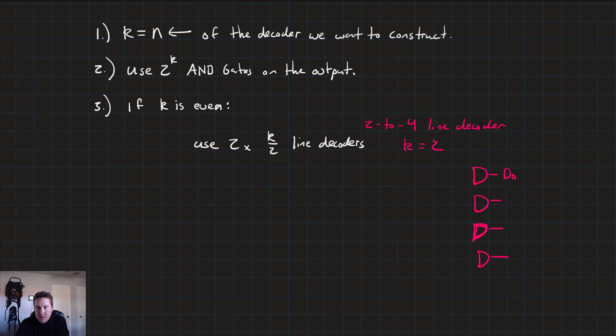That would be our D0, D1, D2, and D3 for outputs. And since k is even, we'll use k over 2 equals 2 over 2 equals 1, an input size one, two 1 to 2 line decoders. So we'll have a 1 to 2 and a 1 to 2. These are the ones that we just built.